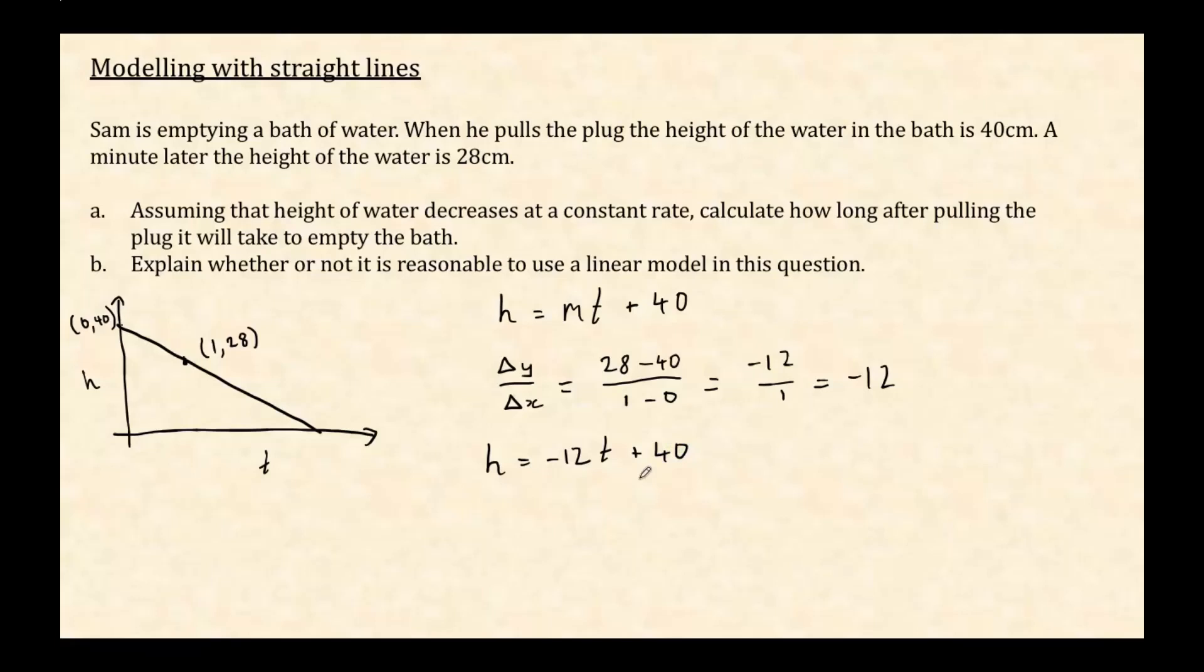Well now the question is pretty straightforward to work out, because what I need to do is work out what the time is when the height is 0, when all the water is gone. So if I set h equal to 0, I've got this equation to solve. I can add 12t to both sides, and then if I divide through by 12, I get 40 over 12. And that's 3 and a third.